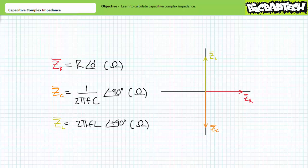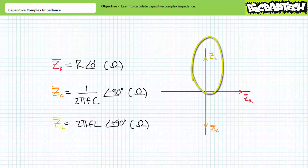Finally, inductors, when represented as complex impedances, are elements that exist entirely in the positive vertical imaginary y-axis. Frequency of the AC source does have effect on the magnitude of inductive impedance using the following formula. Z of L — note the overbar — equals two pi times the frequency in units of hertz, times the inductance in units of henrys, at an angle of positive 90 degrees when represented using polar format. When depicted in the impedance domain, inductors exist solely in the positive imaginary vertical y-axis, proportional to 2πfL. We'll examine inductive complex impedance in an upcoming lecture.